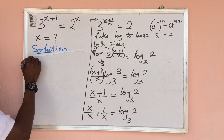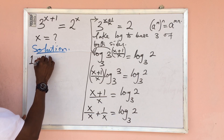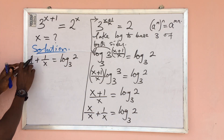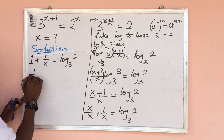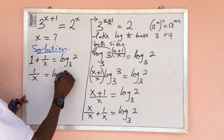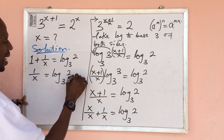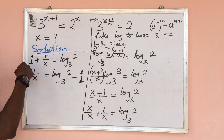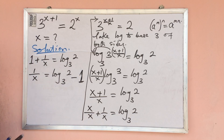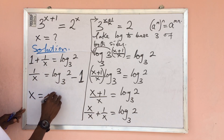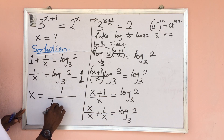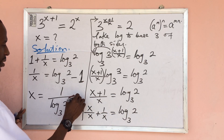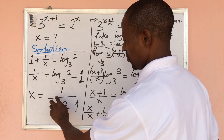Continuing, we have one plus one over x equal to log base 3 of two. Sending the one to the other side gives us one over x equal to log base 3 of two minus one. Finding the reciprocal of both sides gives us x equal to one over (log base 3 of two minus one).